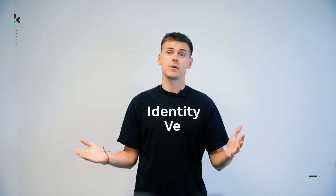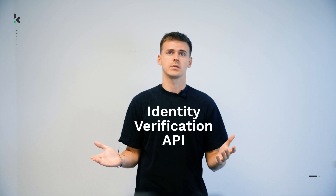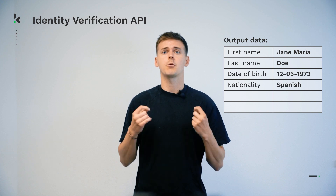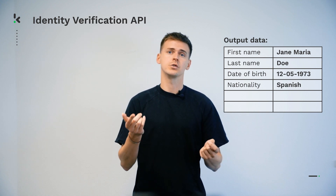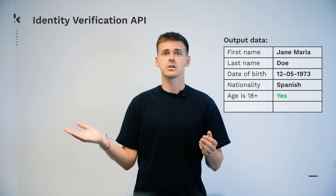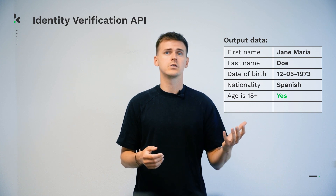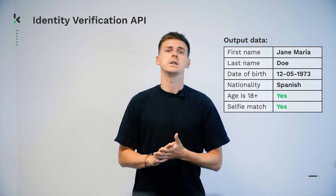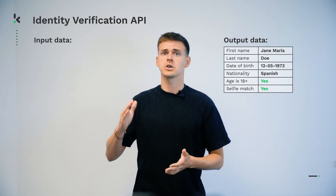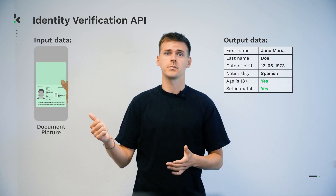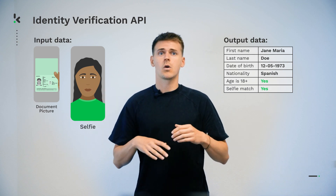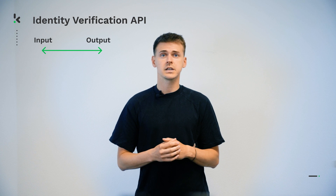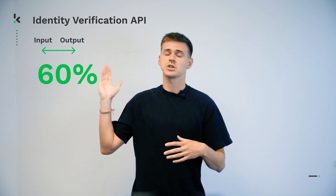Our identity verification API takes that one step further. Next to extracting data from identity documents, it can help you verify the identity of your users by checking their age and comparing a selfie to the picture on the document. In order to do that, all we need is your input, like a picture of your user's identity document, a selfie or any other data that's gathered. From there, our API compares each input to each other and returns a matching percentage.